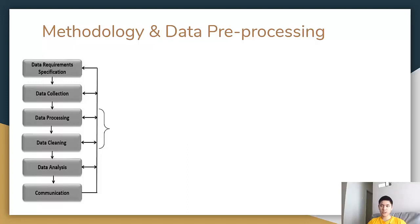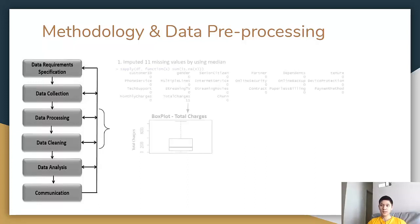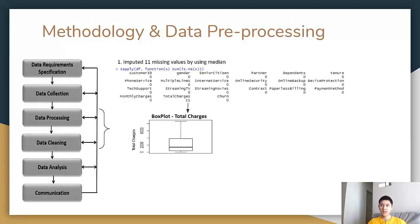After studying the structure and statistics of the data, we realized one of the variables, which is total charges, is having 11 missing values. Upon further investigation on the distribution of the variables, by using the box plot method, we decided to impute the 11 missing values by using the median value, as the data is positively skewed.